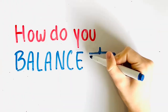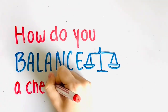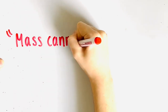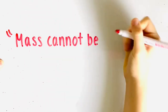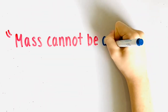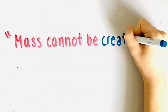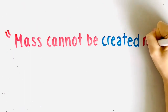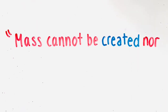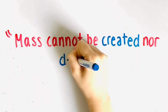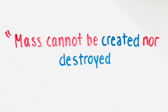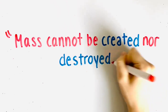How do you balance a chemical equation? In a balanced chemical equation, the number of atoms of an element must be the same on both sides of the reaction. This is because of the law of conservation of mass, which states that mass cannot be created nor destroyed.